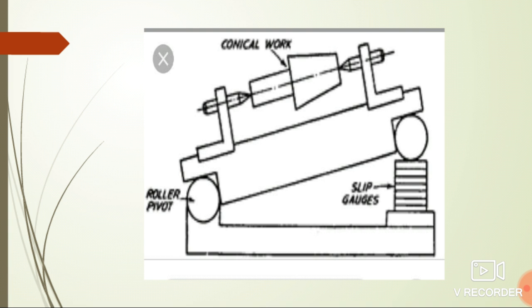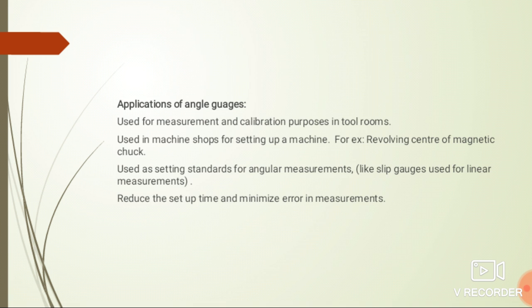This is the diagram of angle gauges. Applications of angle gauges: used for measurement and calibration purposes in tool rooms, used on machine shocks for setting of machines, for example revolving center of magnetic chuck, used as setting standards for angular measurements like slip gauges used for linear measurements, reduce the setup time and minimize error in measurements.